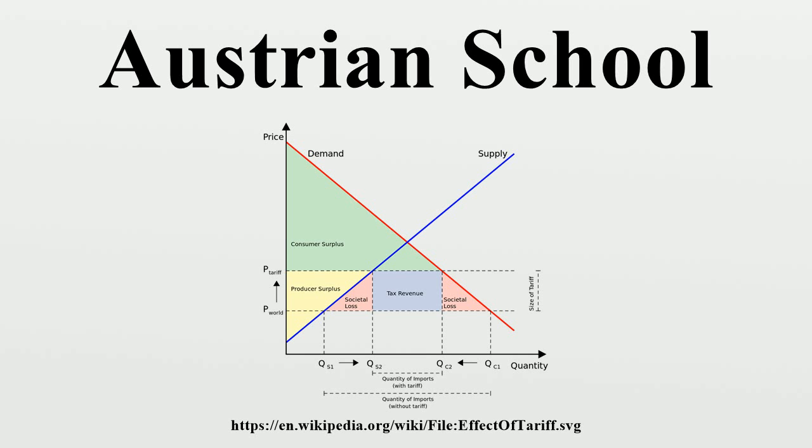Published in English as Human Action, Mises stated that praxeology could be used to deduce a priori theoretical economic truths and that deductive economic thought experiments could yield conclusions which follow irrefutably from the underlying assumptions.